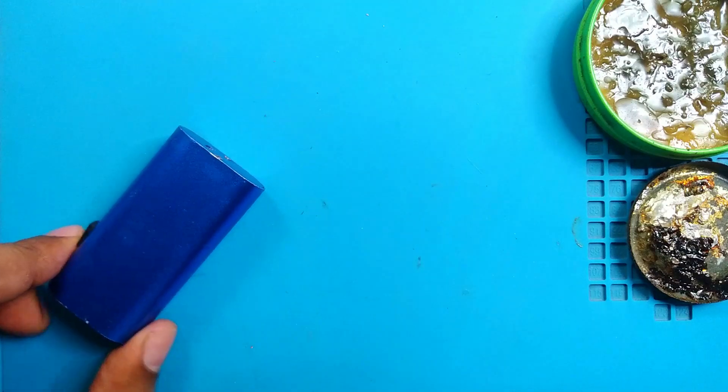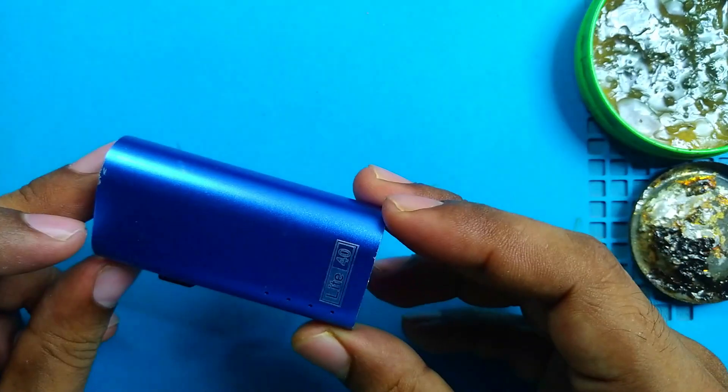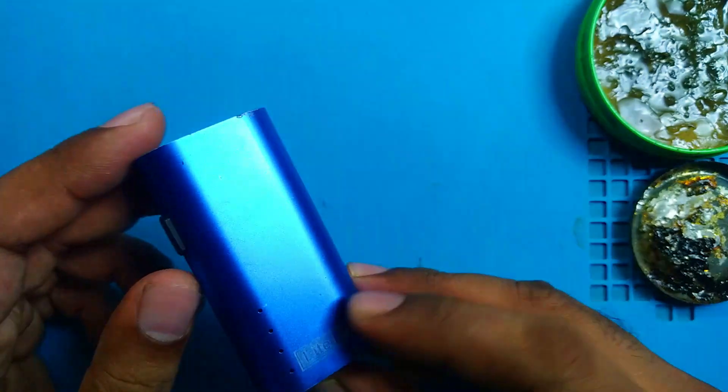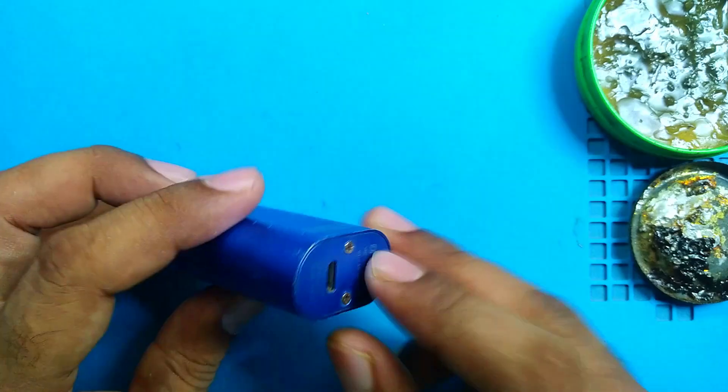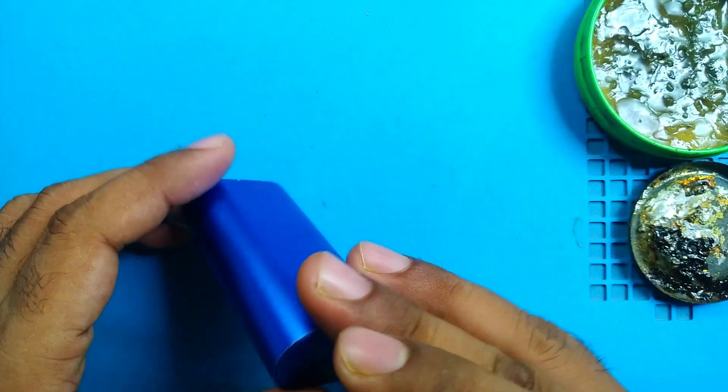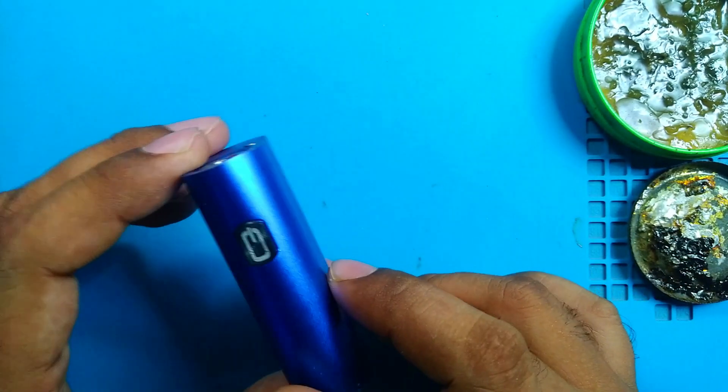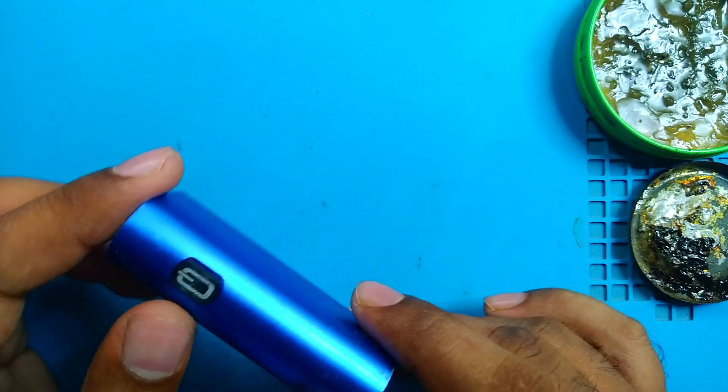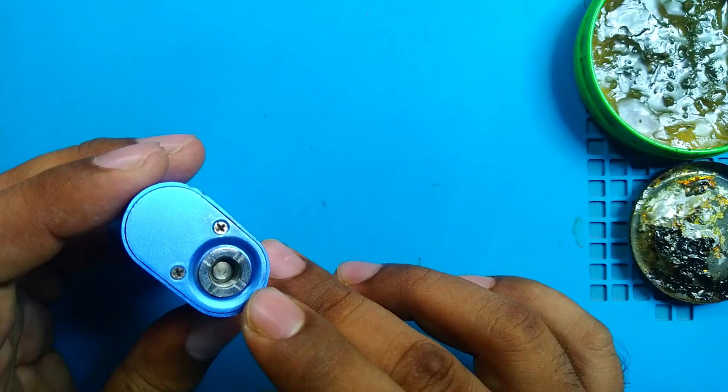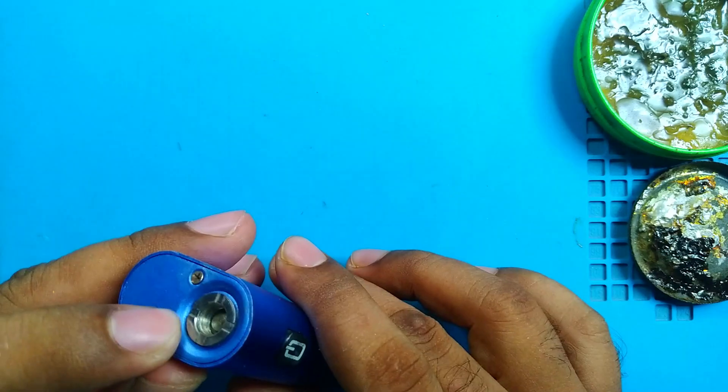If you saw my previous video, then you should remember this vape body. In that video, I cleaned its board and components and upgraded its battery. I also said that I will make it a portable soldering pen. That's why I ordered some 8-watt, 5-volt micro soldering tips, and after two months they came from China.